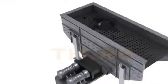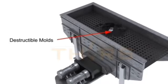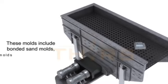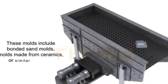In contrast to permanent molds, destructible molds are broken up to retrieve the castings. These molds include bonded sand molds, molds made from ceramics, or similar materials.